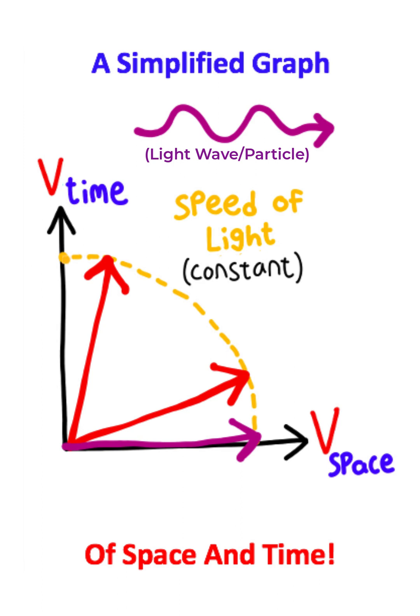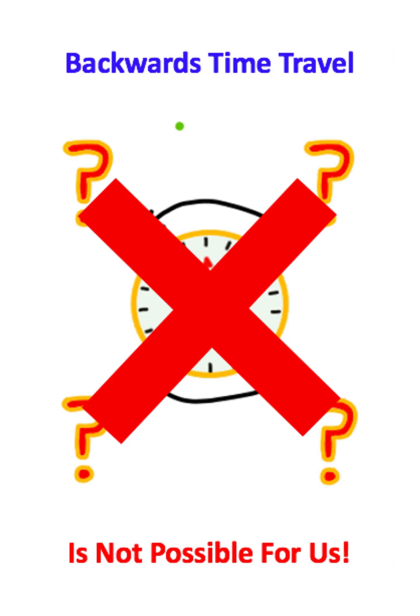Even if you were a photon, notice you still would never exceed the speed of light. Time for you would simply stand still. So backwards time travel cannot happen.